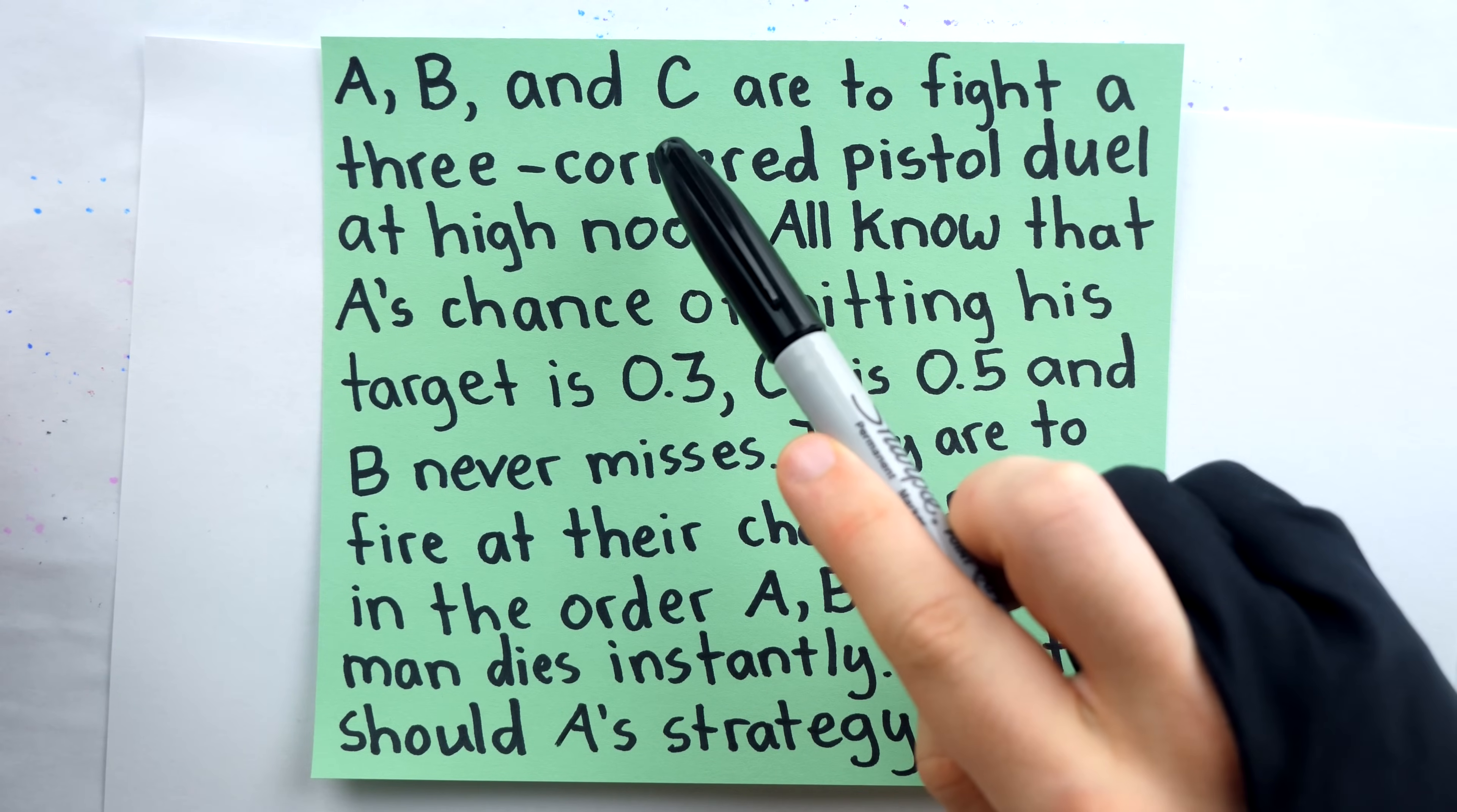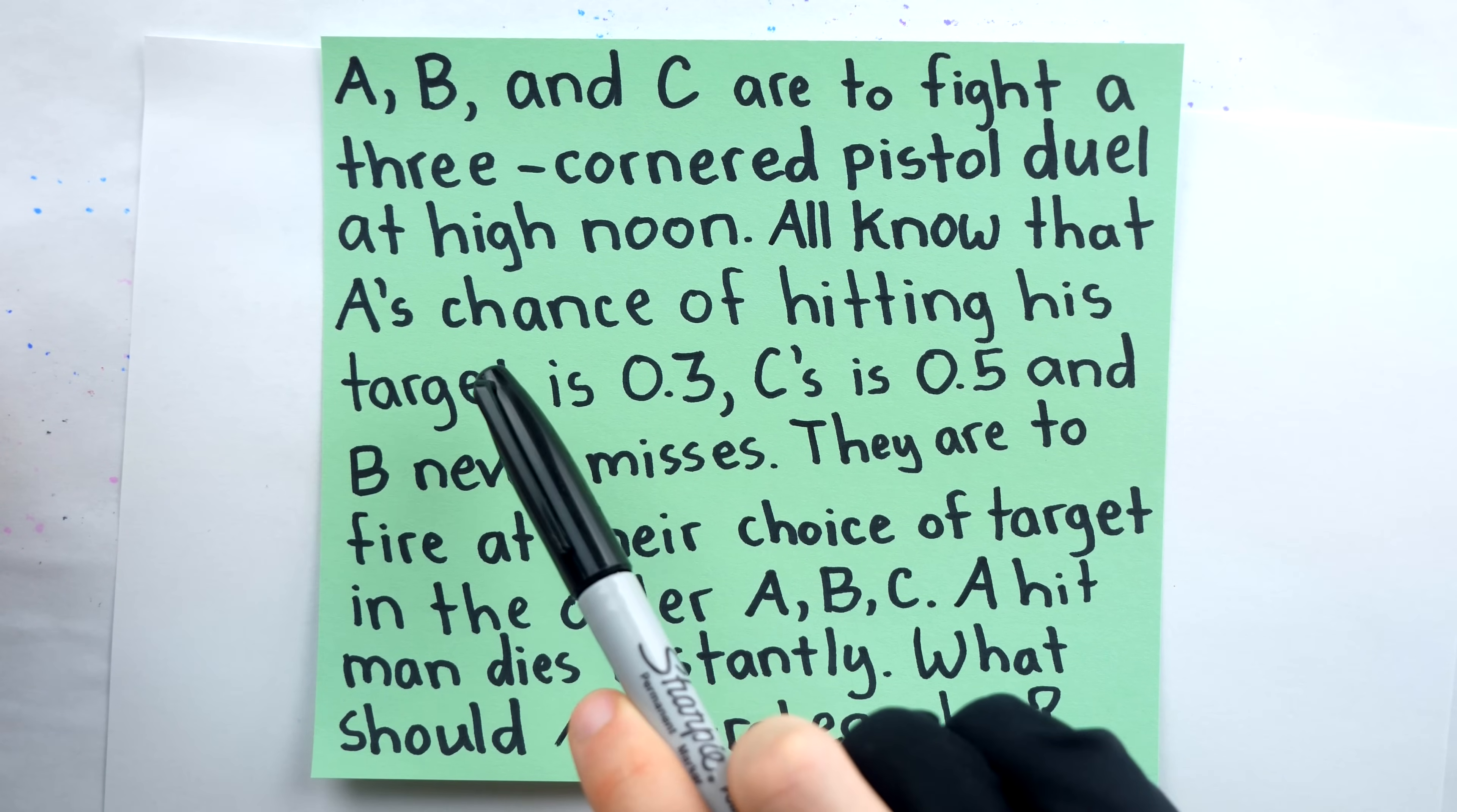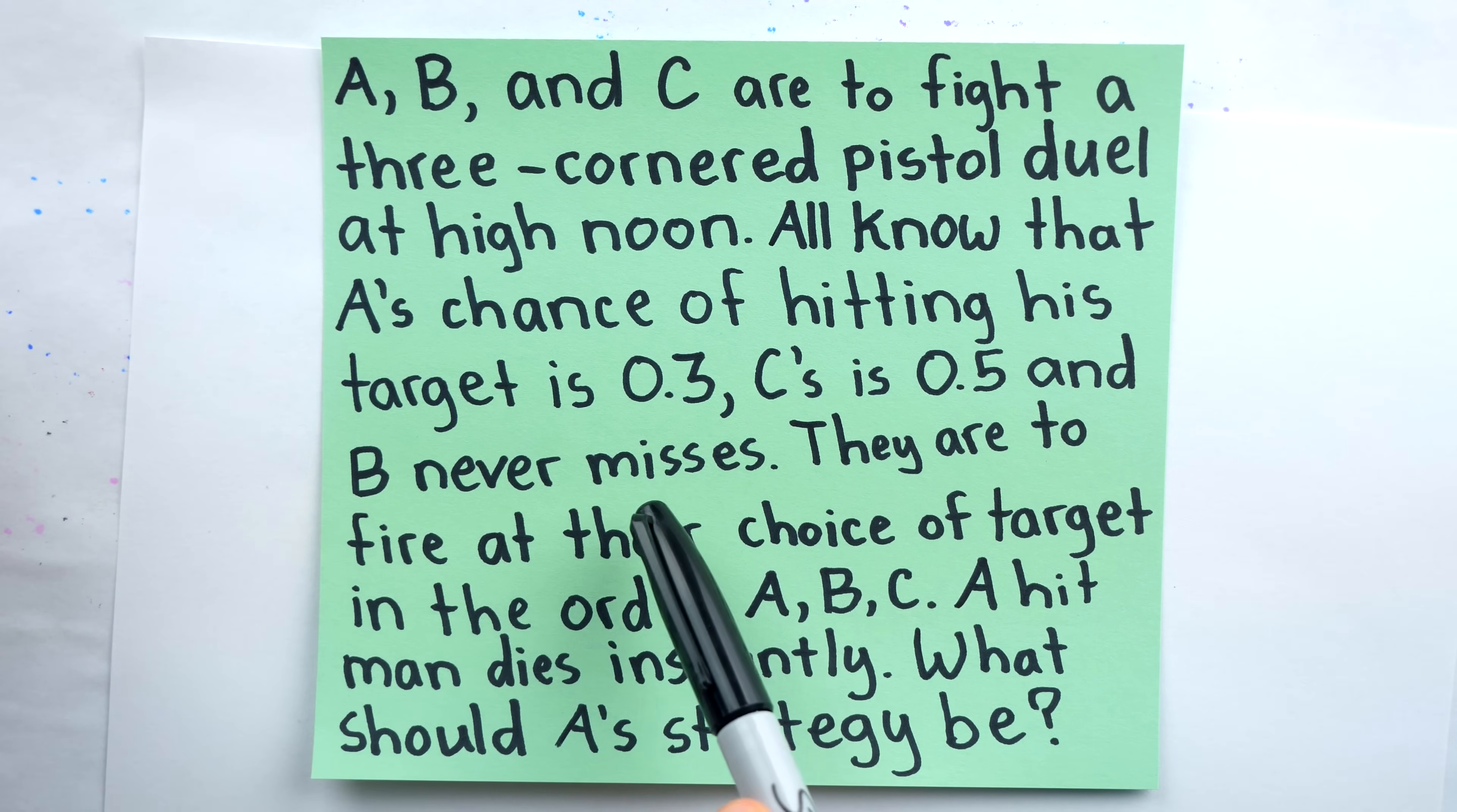Here it is. A, B, and C, our sharpshooters, are to fight a three-cornered pistol duel at high noon. All know that A's chance of hitting his target is 0.3, C's is 0.5, and B never misses.